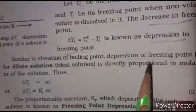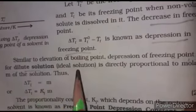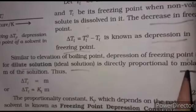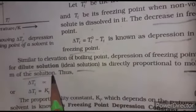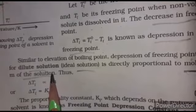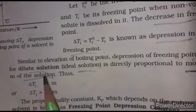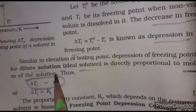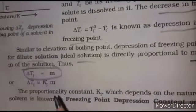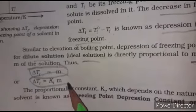Similarly to elevation of boiling point, the depression of freezing point delta Tf for a dilute ideal solution is directly proportional to the molality (m) of the solution. Just as elevation of boiling point is directly proportional to molality, so too is the decrease in freezing point. Therefore: delta Tf = Kf × m.